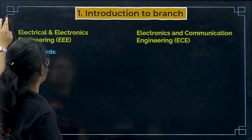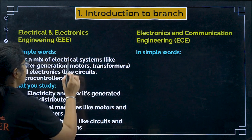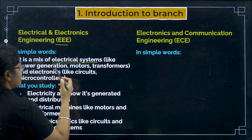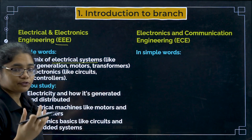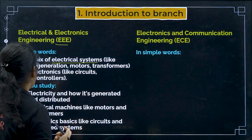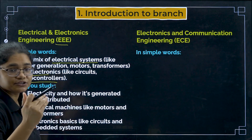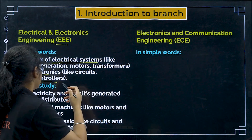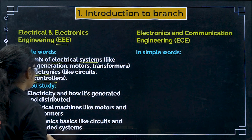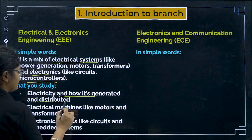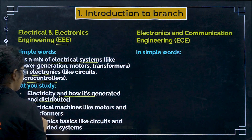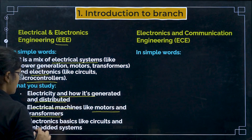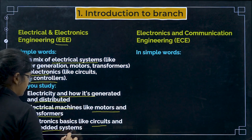First, the introduction to both branches. EEE — Electrical and Electronics Engineering — is a mix of electrical systems like power generation, motors, and transformers, meaning all the systems through which electricity is generated, and electronics like circuits and microcontrollers. So in EEE, you study how electricity is generated and distributed, electrical machines like motors and transformers, and electronics basics like circuits and embedded systems.